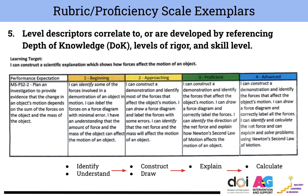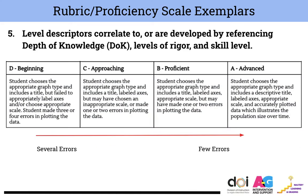Here's an example where the teacher has provided descriptors in which the vocabulary or the verbs change as we increase the proficiency levels. At level one, beginning, a student is expected to be able to identify and understand. As we move up those proficiency levels, a student should be able to explain, calculate, and solve. In another example, from lower levels to higher levels the student is making different amounts of errors — at the beginning level the student is making up to four errors, and as we move into proficient the number of errors has decreased to maybe one or two.